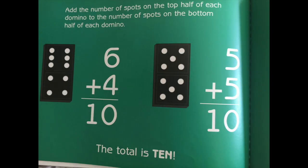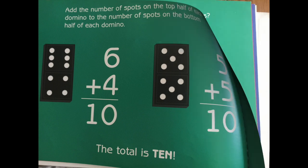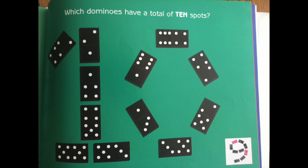Add the number of spots on the top half of each domino to the number of spots on the bottom half of each domino. Six plus four, ten. Five plus five, ten. The total is ten. Which dominoes have a total of ten spots?